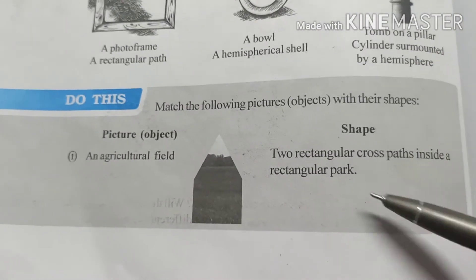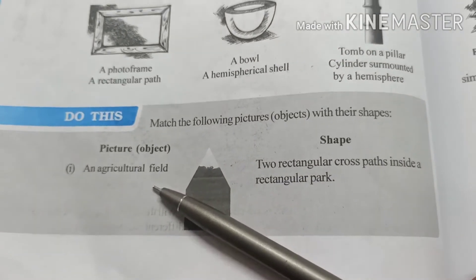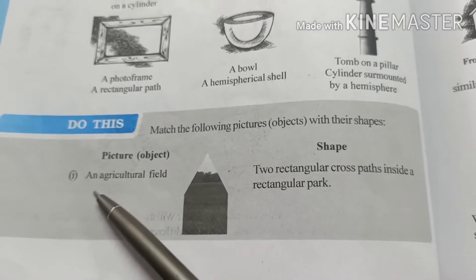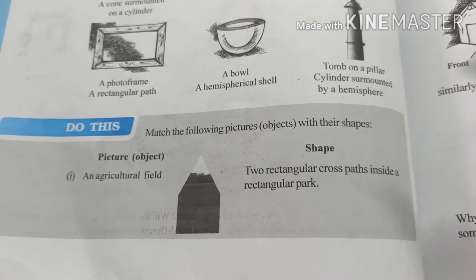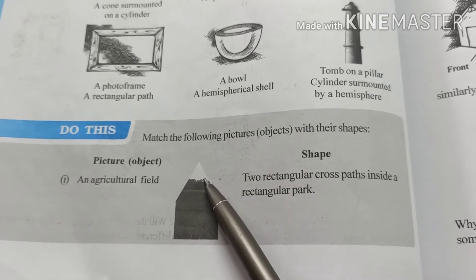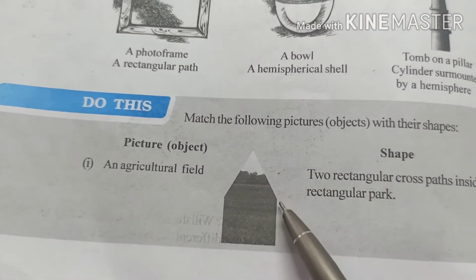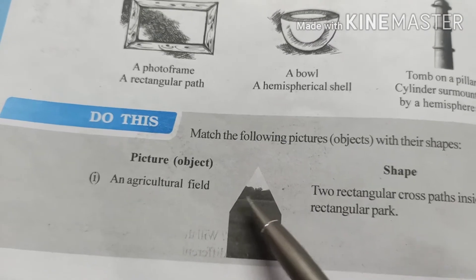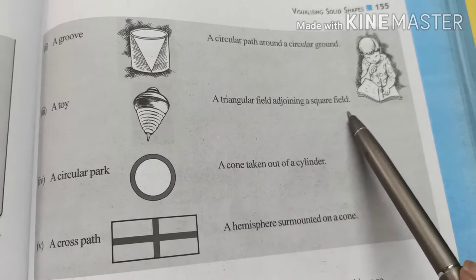Welcome back, students. Now some more shapes and objects are given to you and we have to match the columns. The first picture is an agricultural field. If you observe it carefully and draw the middle line, you can see a triangular field adjoining a square field — combining both gives the complete shape.